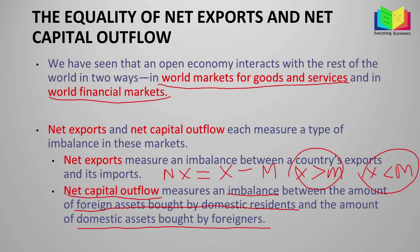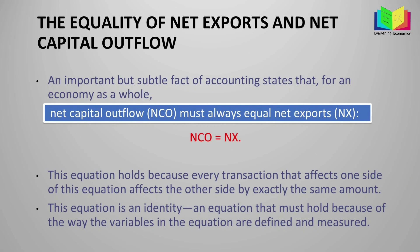An important but subtle fact of accounting states that for an economy as a whole, net capital outflow must always equal net exports — that is, NCO = NX. This equation holds because every transaction that affects one side of this equation affects the other side by exactly the same amount. This equation is an identity: an equation that must hold because of the way the variables are defined and measured.